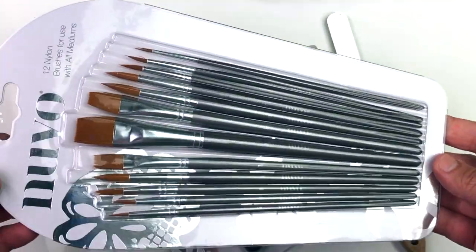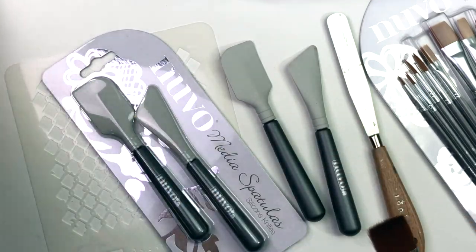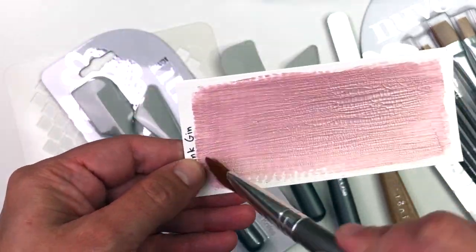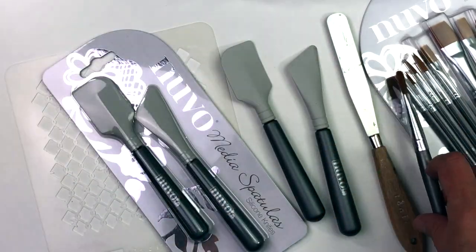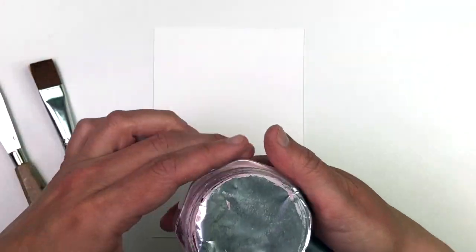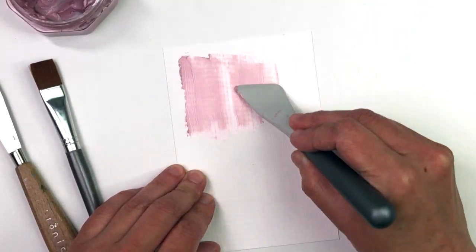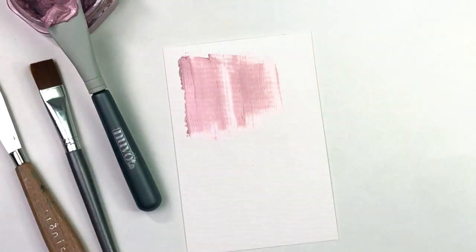And also I've found that these Nuvo paint brushes are really great for applying product as well. So those last samples that you saw were all applied with a flat brush, just like this one. Okay, let's grab a piece of paper, some pink gin crackle mousse, and one of those media spatulas so I can show you how they work. You just dig a little bit out, and smear it onto your paper just like that.